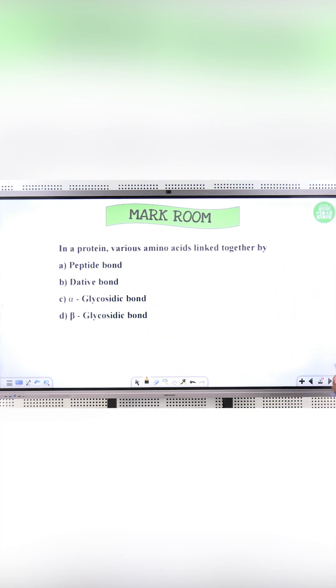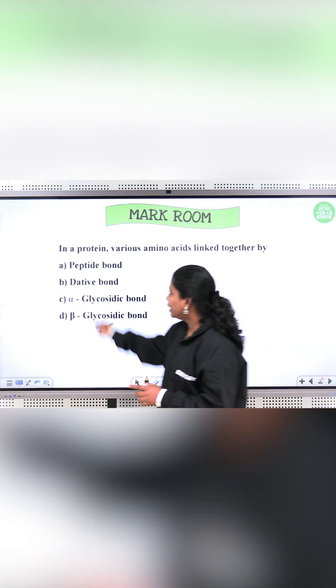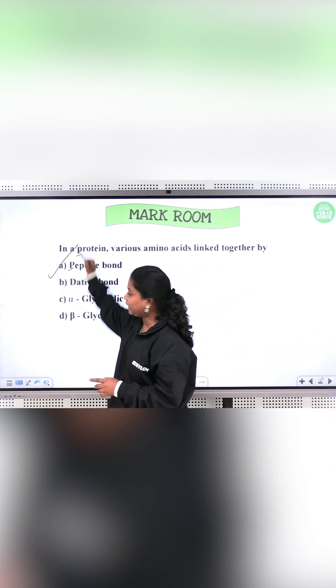First question, in a protein, various amino acids are linked together by, so the right answer is peptide bond.